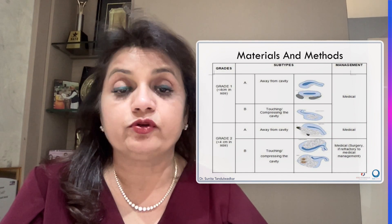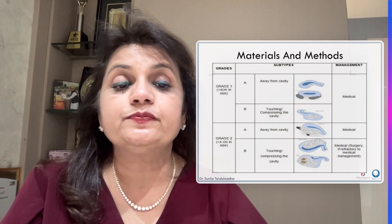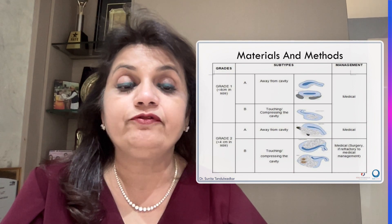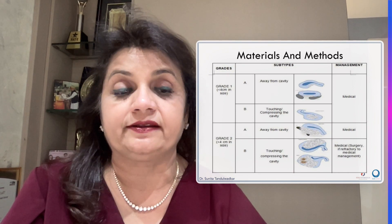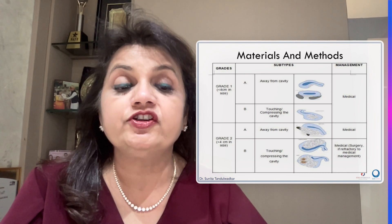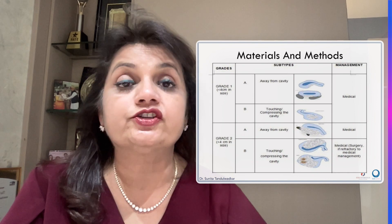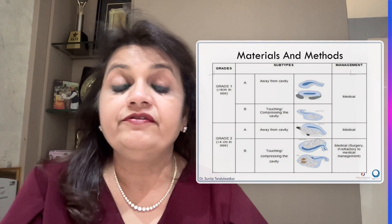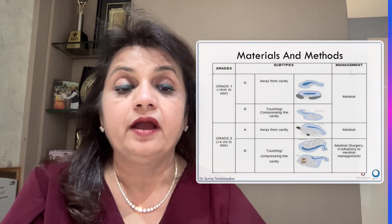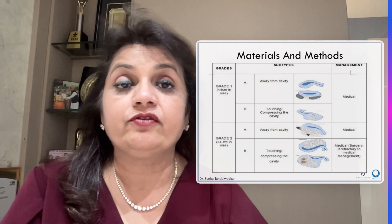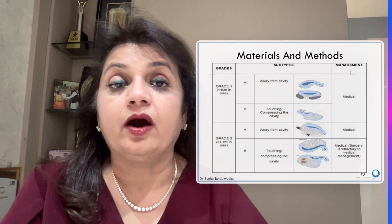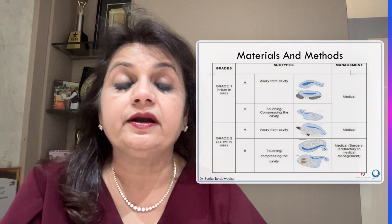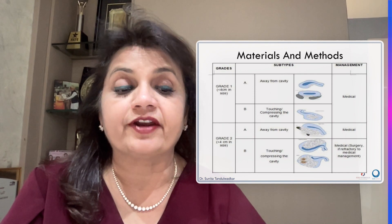Grade 2 is more than 4 cm. Grade 2A means more than 4 cm but away from the cavity, and Grade 2B is more than 4 cm and touching or compressing the cavity. Grade 2A, which is away from the cavity, again needs only medical treatment before FET. But for Grade 2B, we should try medical treatment first; however, if it doesn't help in relieving compression on the cavity, then in such rare refractory cases, surgery can be considered.